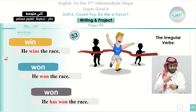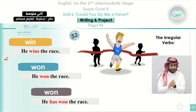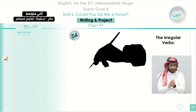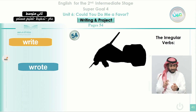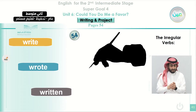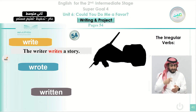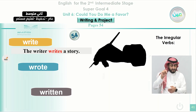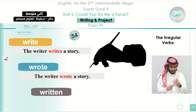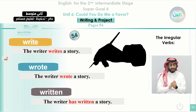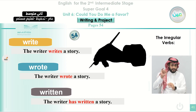Number four, the verb 'write': past is wrote, past participle is written. We can say: 'The writer writes a story' (present). If it happened in the past: 'The writer wrote a story.' And if the writing is finished and we talk about the action: 'The writer has written a story.'